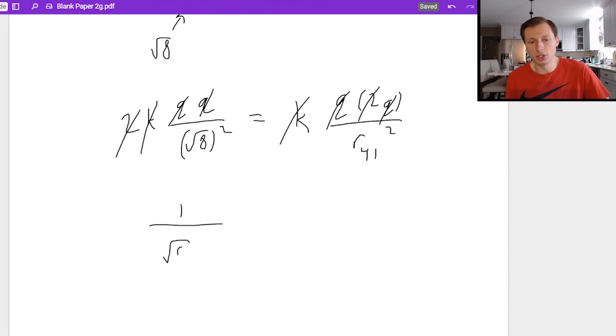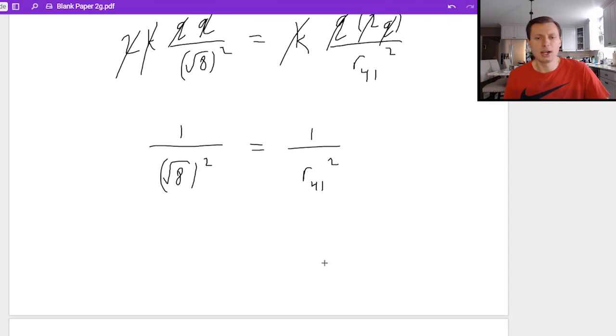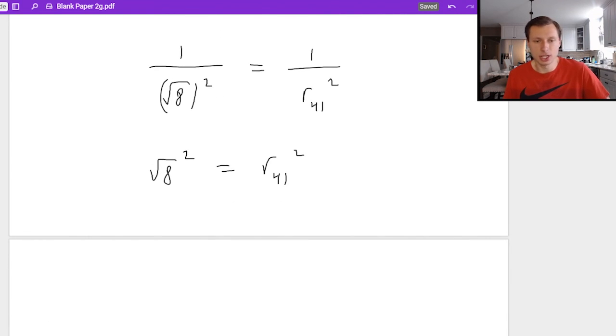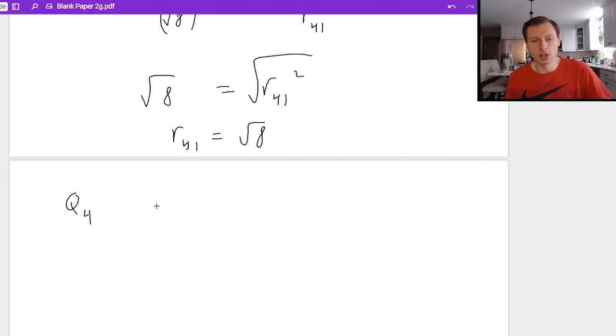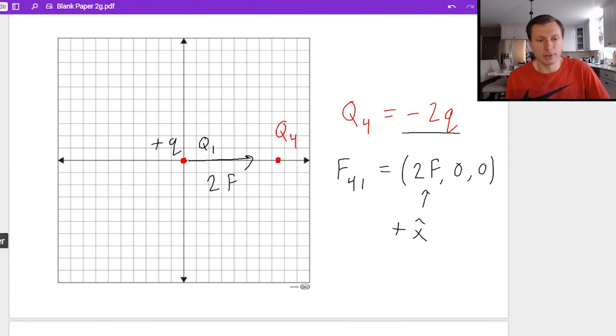And now I'm just left with one over the square root of eight squared is equal to one over r four one squared. Again, I would take the reciprocal of both sides square root of eight squared equals r for one squared. In case you're curious, the square root of eight squared is just eight. But then I need to take the square root anyway. So I'm back to root eight. So it looks like r for one is the same distance as everything else we've seen today. So in other words, it looks like charge for q four is going to be 2.8 to the right of q one. So going back to my picture, I need to draw q four 2.8 to the right. That's about there. There's my q four.